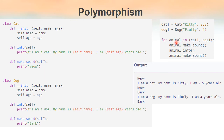In the for loop, the variable animal iterates over a tuple containing cat1 and dog1. At the beginning, animal holds the value of cat1, which is the object of class Cat. So when we call animal.makeSound, it calls the makeSound method of class Cat and prints 'meow'. Similarly, animal.info calls the info method of class Cat. Next, animal becomes equal to dog1, the object of class Dog. So when we call animal.makeSound now, it prints 'bark', because the makeSound method of class Dog is executed.